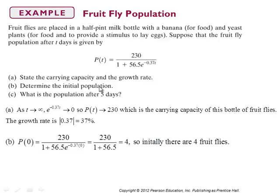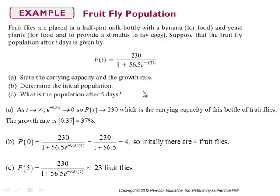Part B: the initial population is determined at T = 0. e^0 = 1, so you have 56.5 + 1 = 57.5 in the denominator, giving 230 / 57.5 = 4 fruit flies placed in the bottle at day zero. Part C: what is the population after five days? Replace T by 5 in the function. Use your calculator to evaluate it, and that works out to be about 23 fruit flies.